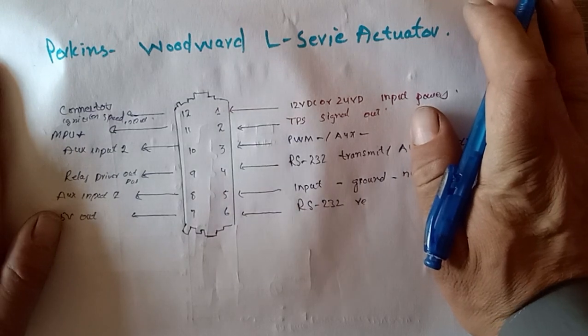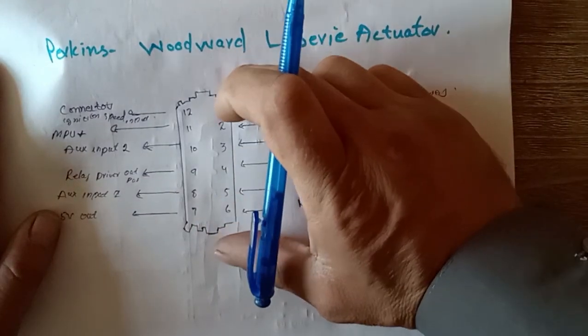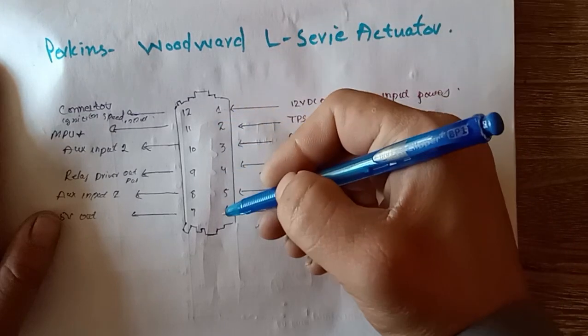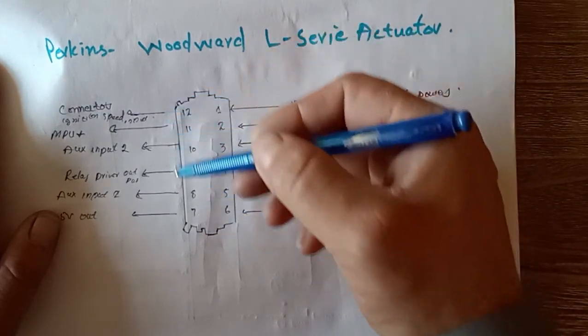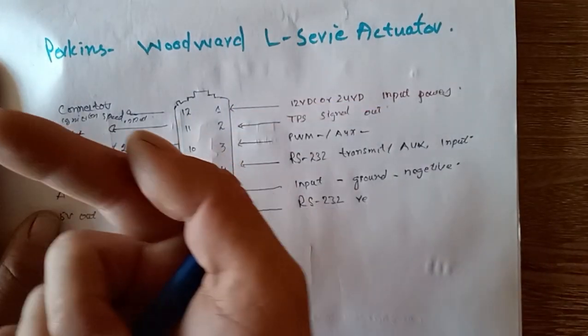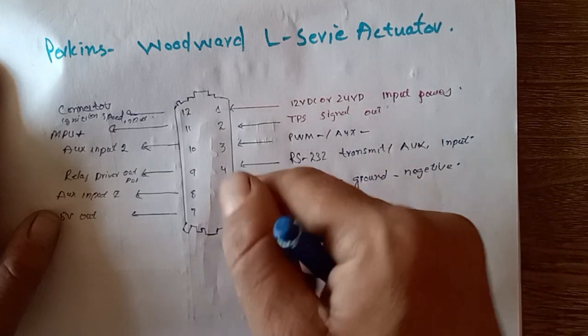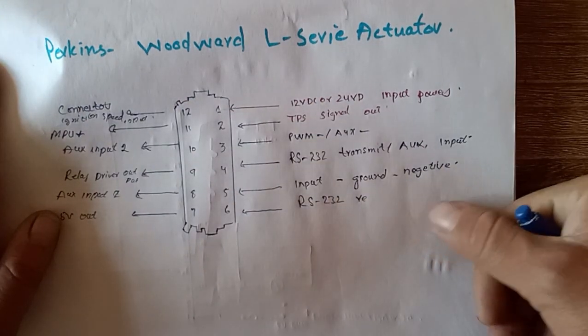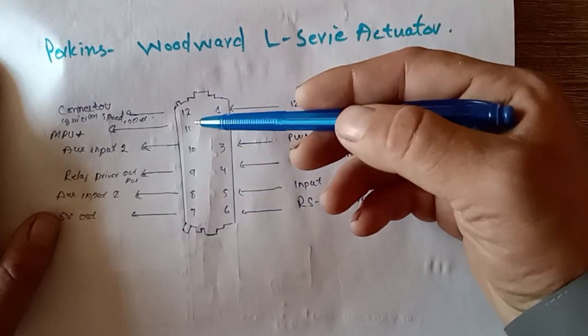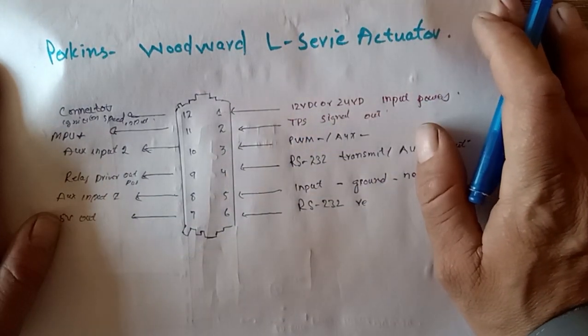Now understand, this L series actuator has a connector which has 12 pins. This is the connector front view. As you can see here, the picture of L series actuator, this is the connector port. Sometimes these pins are empty, sometimes these pins you need to connect for your work.